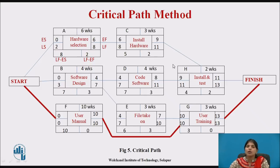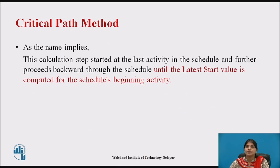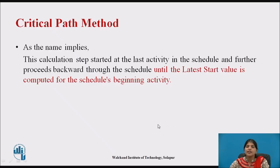In this way you identify the critical path. As the name implies, the backward pass calculation starts at the last activity in the schedule and works backward until the latest start value is computed for the first activity — starting from the latest finish date and ending with the latest start date.